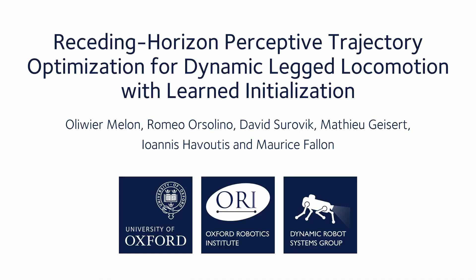My name is Oliver Mellon. I'm a DPhil student at the University of Oxford supervised by Morris Fallon and Ioannis Havutis. In collaboration with Romeo Orsolino, David Serovic and Matteo Giser, I present our work on receding horizon perceptive trajectory optimization for dynamic legged locomotion with learned initialization.